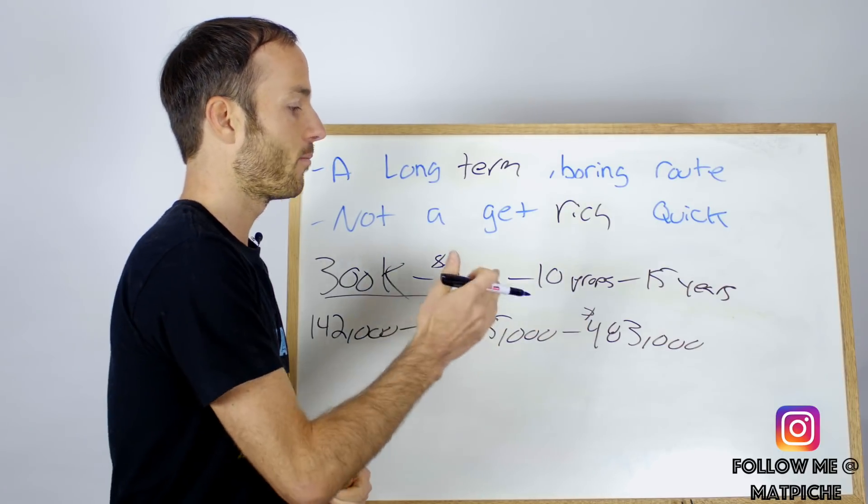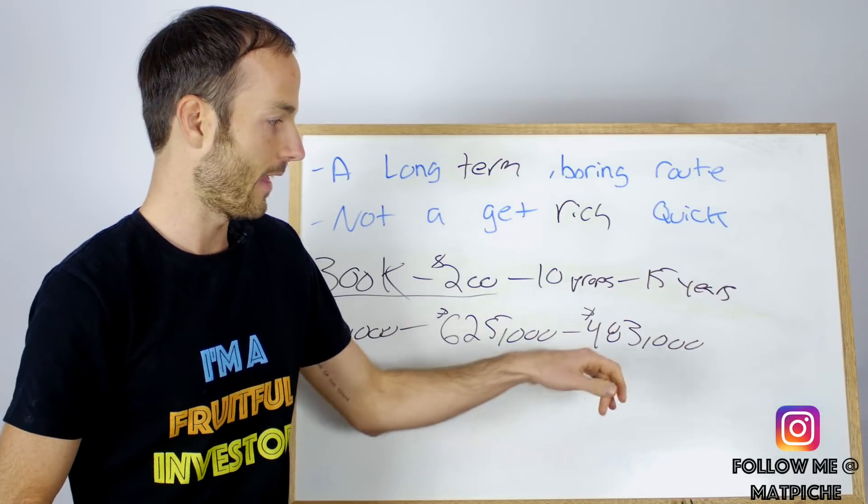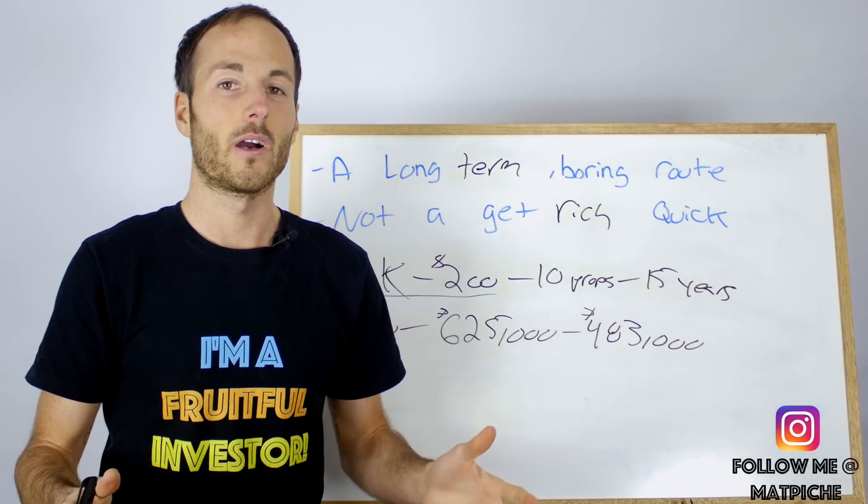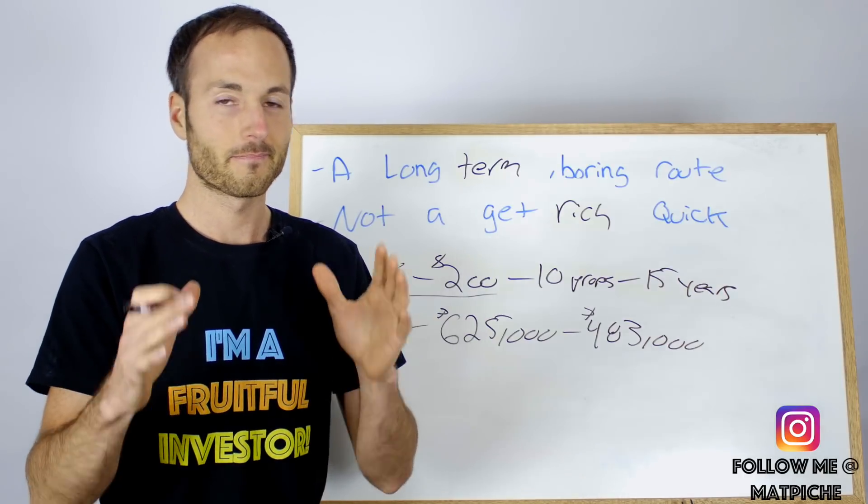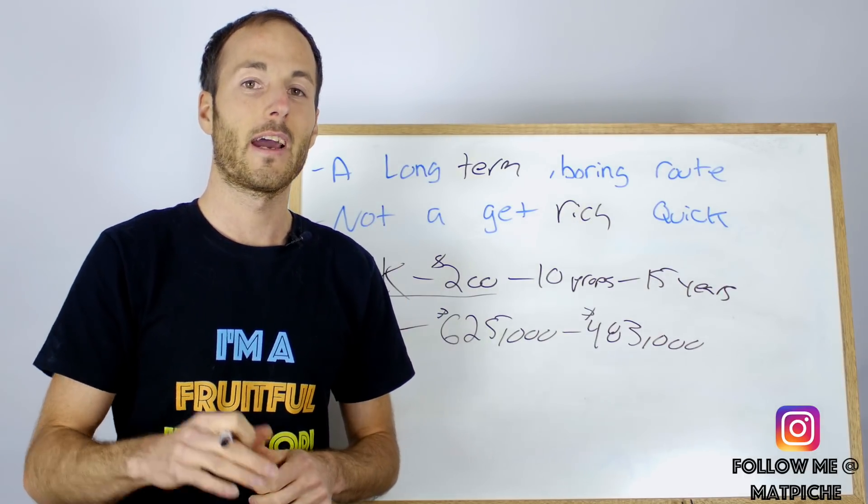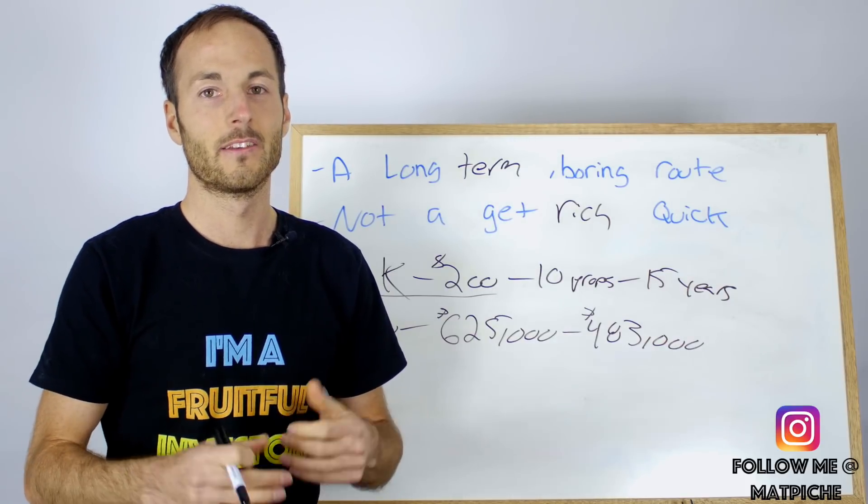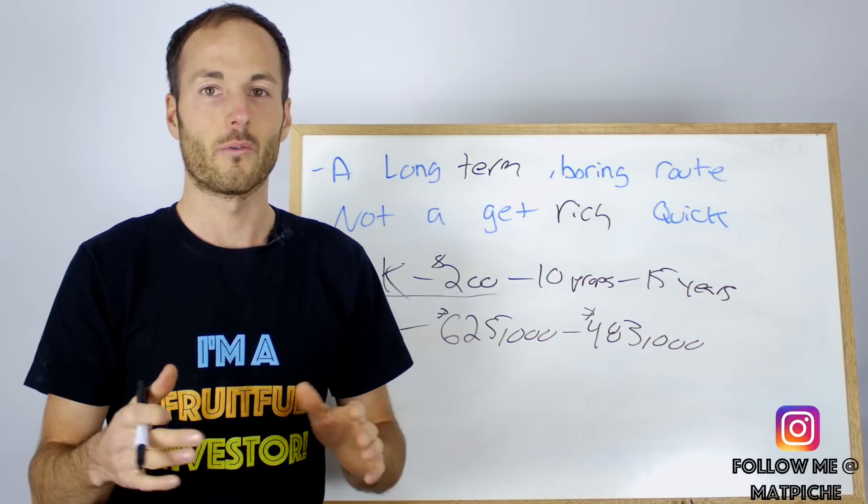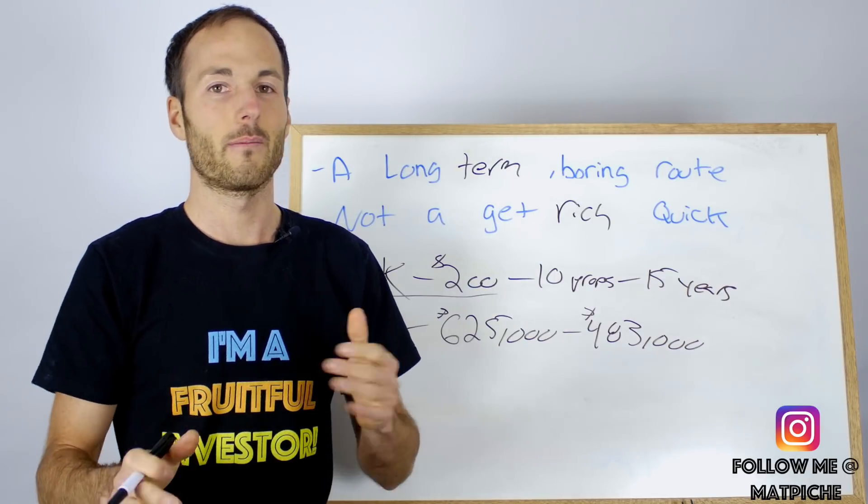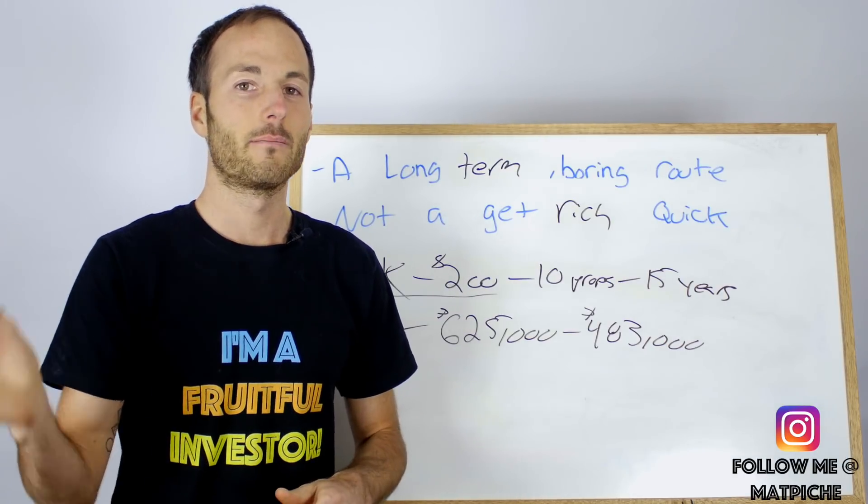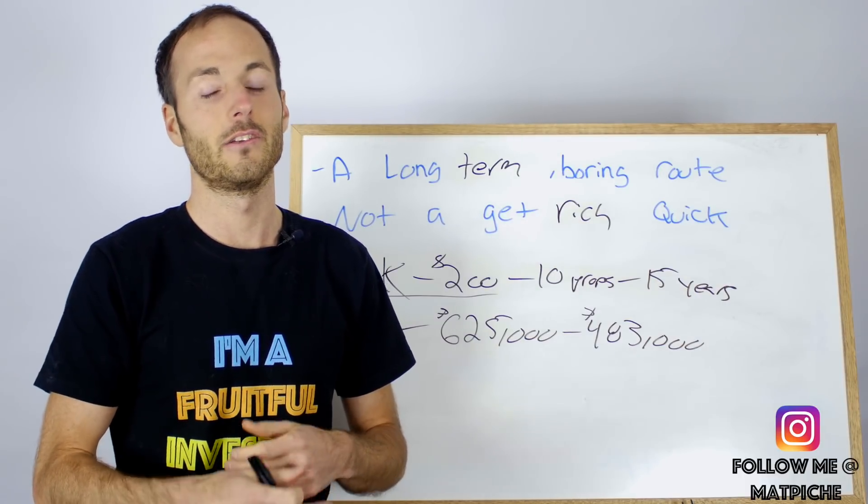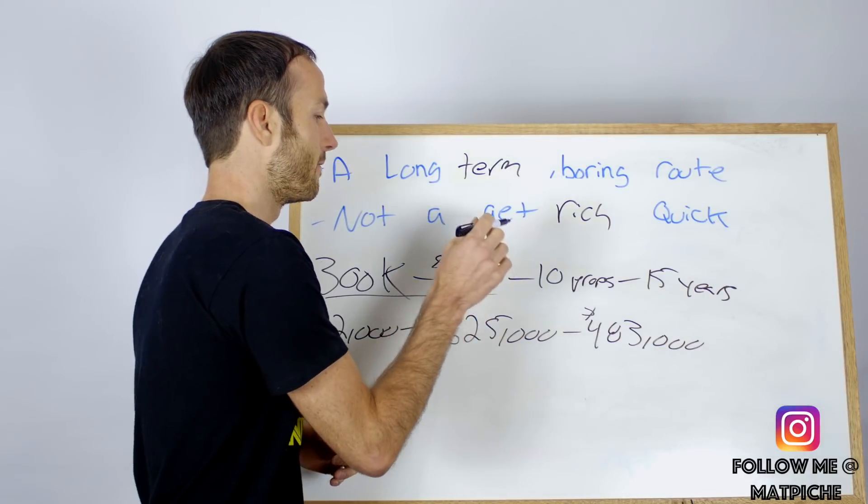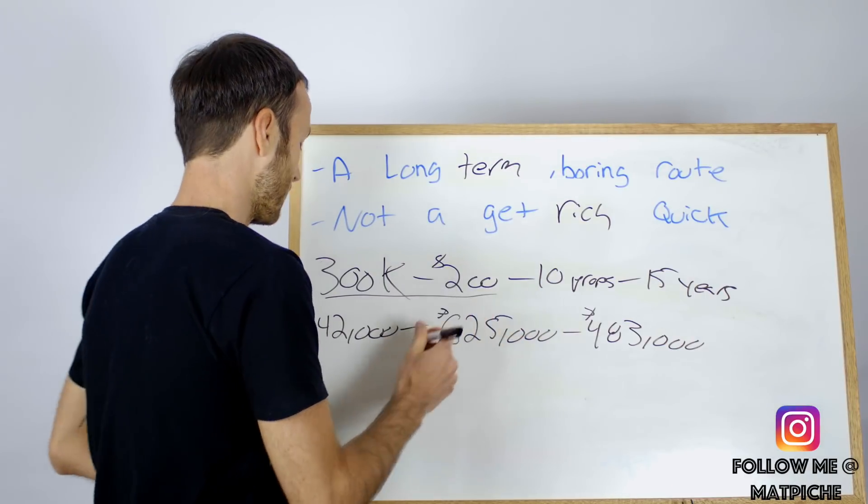If we were to sell all ten properties and each one would give us $483,000, we would have $4.8 million dollars cash. Now it's not realistic or a good idea to sell all of our properties and just have all this cash when you retire. You want to have some money coming in every single month to fund your lifestyle, whether it's traveling all over the world, living on a beach in Costa Rica or Hawaii like I want to do, or a laptop lifestyle.